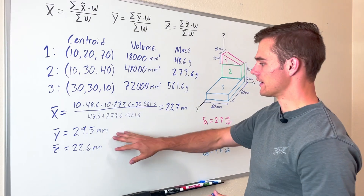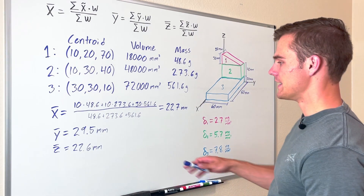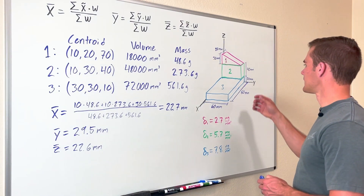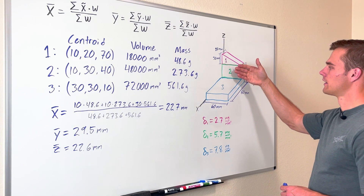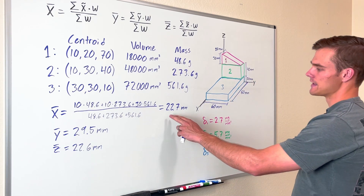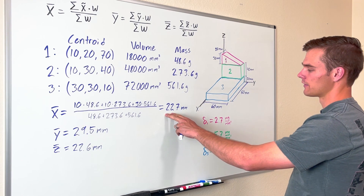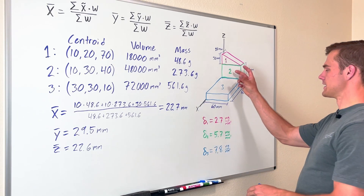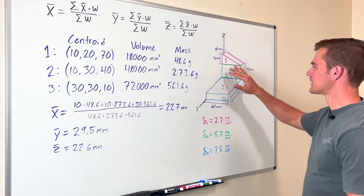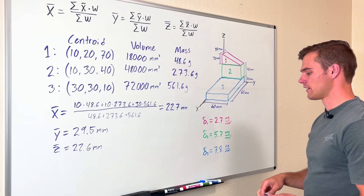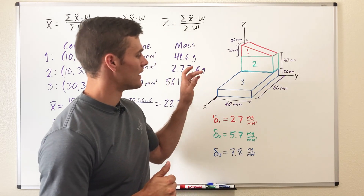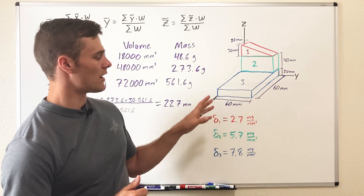Looking at this coordinate (22.7, 29.5, 22.6), it isn't even going to be on this object — since each block is a thickness of 20 millimeters, the X coordinate of the center of mass is about 2.7 millimeters away from this wall, so it's going to lie somewhere out here away from this object. That's a good example of how to find the centroid of a 3D object that doesn't have constant density.